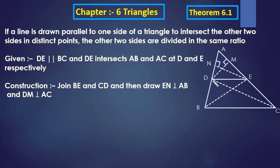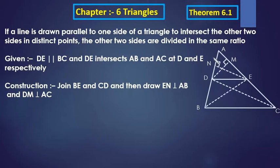Here it is given that DE is parallel to BC — the third side. This DE is parallel to BC and intersects AB at D and AC at E. These D and E are the two distinct points lying on AB and AC respectively.